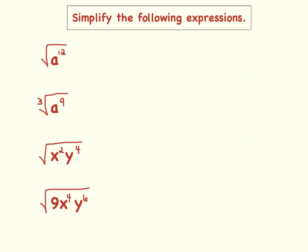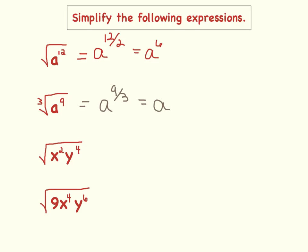Now let's practice simplifying expressions. First, the square root of a to the 12th power. I'm going to change that to rational form: a to the 12/2 power. What is 12 divided by 2? It's 6, so we have a to the 6th power. Now let's look at the cube root of a to the 9th power. Changing to rational form, my base is a, my numerator is 9, and my denominator is 3. So I have a to the 9/3 power — 9 divided by 3 is 3 — so that simplifies to a to the 3rd power.